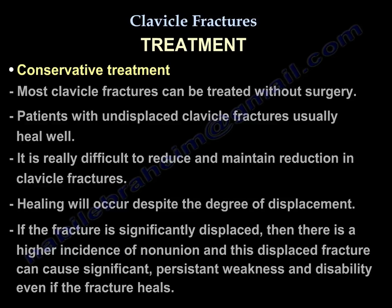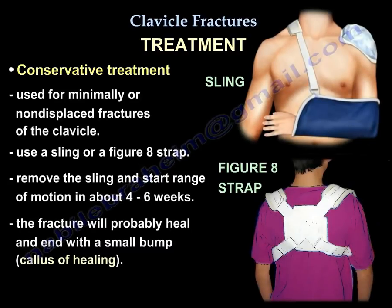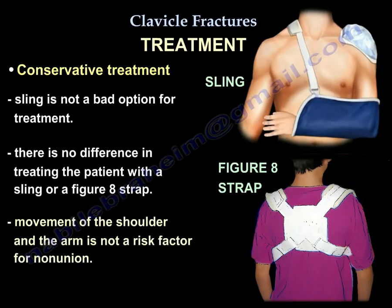Non-operative treatment is used for minimally or non-displaced fractures. Treat them with a sling or figure-eight strap, remove the sling after a few weeks, and start range of motion. The patient will likely heal and end up with a small bump — the healing callus. There is no difference between a simple sling and figure-eight strap, and early shoulder movement is not a risk factor for nonunion.